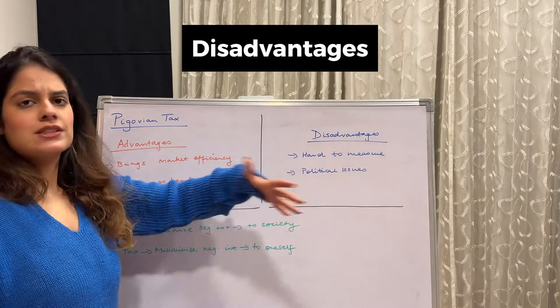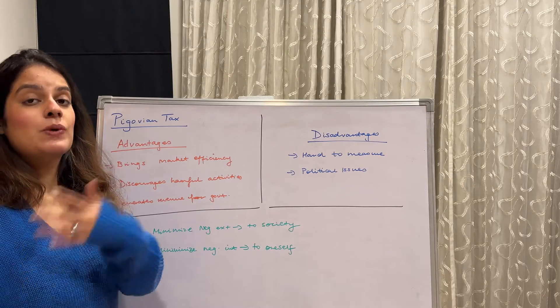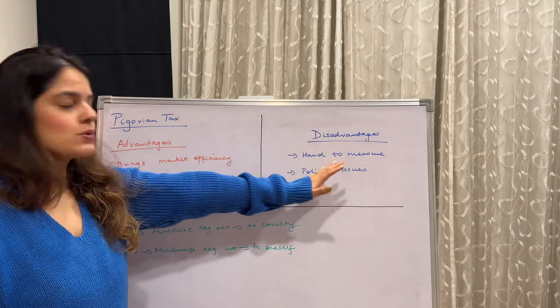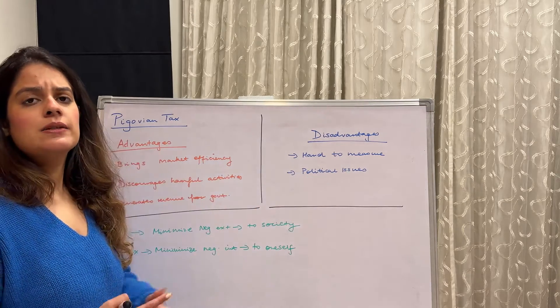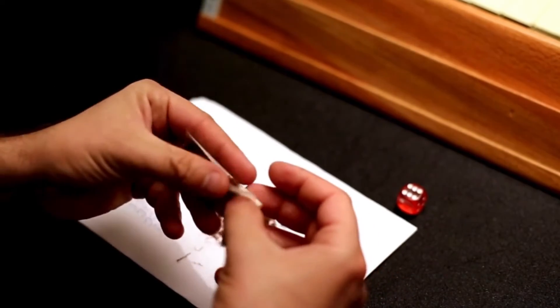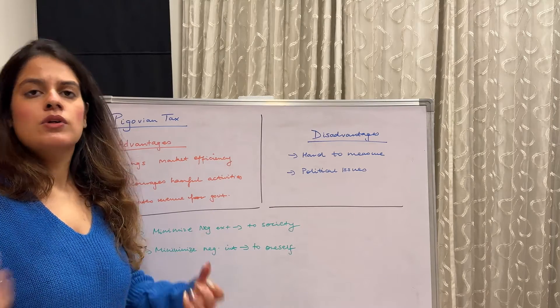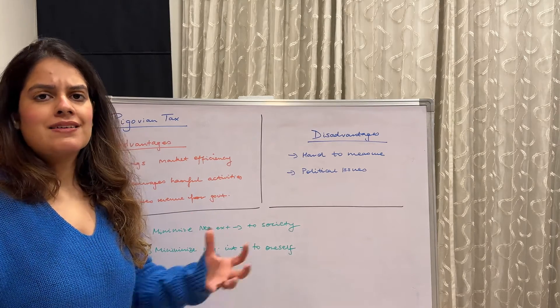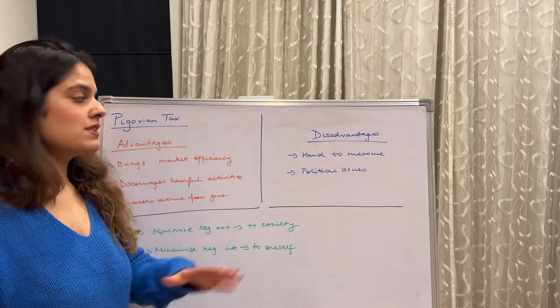Now, disadvantages. It was easily said that the Pigovian tax is equal to the cost of externality — but it is not easy to measure those externalities, and that is a very big disadvantage. Secondly, there is a political issue — for example, large taxes imposed on tobacco producers mean those producers are not happy, and there are a lot of political parties involved and political issues arising from these taxes.